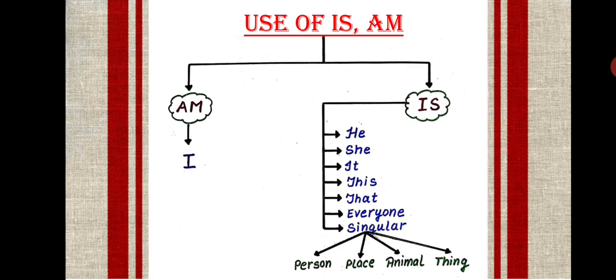Next is she. She is a teacher. Next is it. It is raining. Next is this. This is a ball. Next, that. That is a tree.